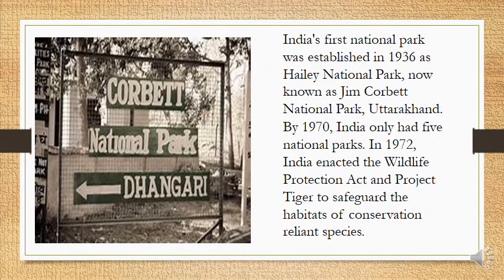India's first National Park was established in 1936 as Haley National Park, now known as Jim Corbett National Park, situated in Uttarakhand. By 1970, India only had five National Parks. In 1972, India enacted the Wildlife Protection Act and Project Tiger to safeguard the habitats of conservation-reliant species. Corbett has the glory of being India's first, oldest, and most prestigious National Park, and is also honoured as the place where Project Tiger was first launched in 1973.